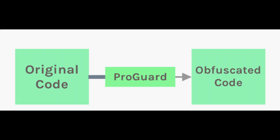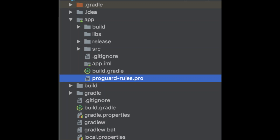These rules specify which classes and methods should be kept and removed during the optimization and obfuscation process. ProGuard rules are defined in a text file called proguard-rules.pro, which is located in the app's project directory.